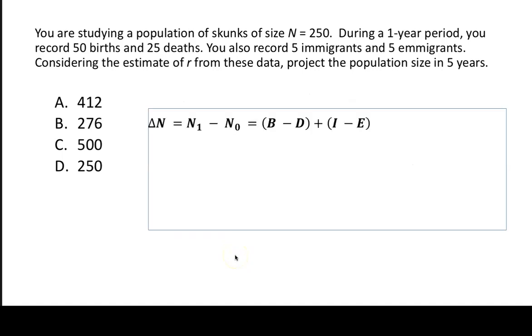So we're going to start with this equation here. Let's look at calculating delta N. So we have 50 births, subtract 25 deaths. Births and deaths account for 25 individuals increasing the population. We add that to 5 immigrants minus 5 emigrants, and that's going to be 0. So the total change in population size just from birth, death, immigration, emigration is 25.